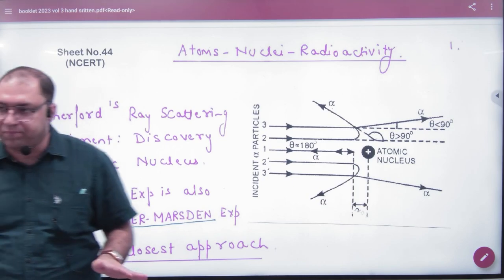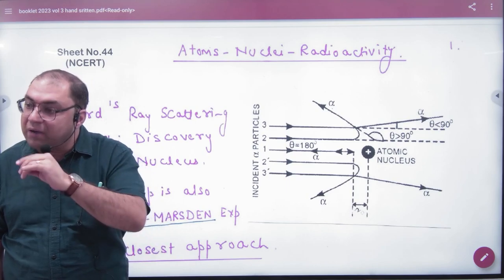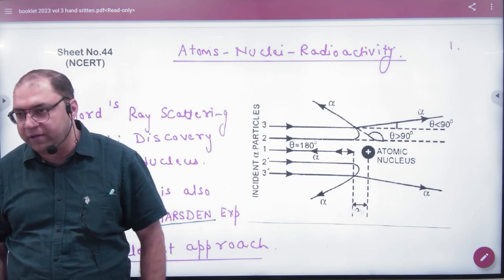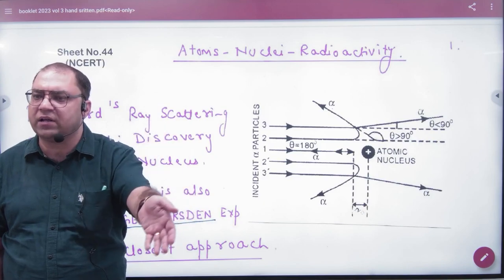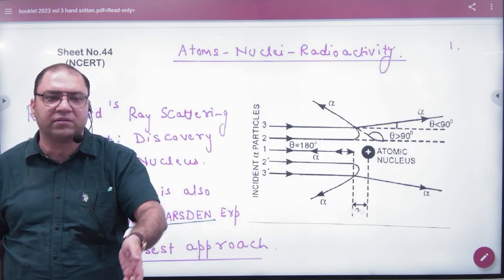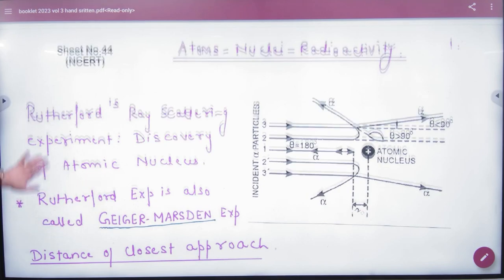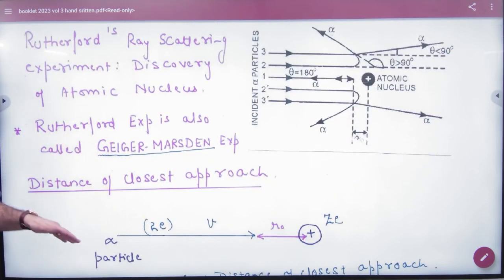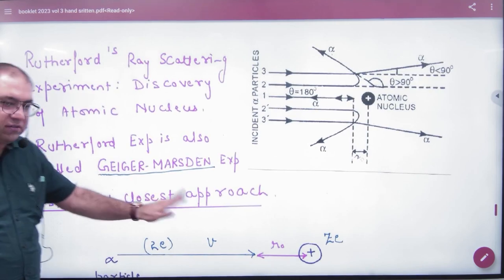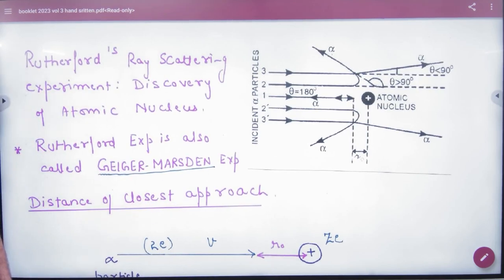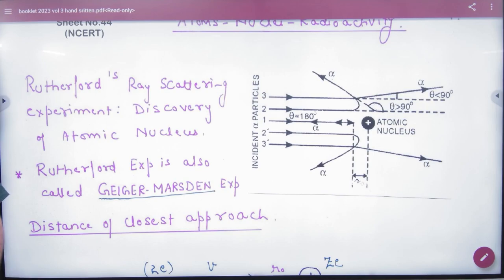Rutherford, what is Geiger Marsden experiment? These questions in which some do not know that Rutherford experiment and Geiger Marsden experiment is one thing. In this, one topic is distance of closest approach. Distance of closest approach is what?